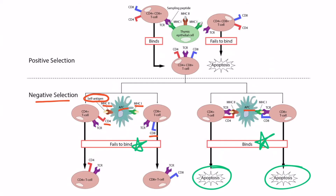You may be wondering how MHC2 presents self-antigen to CD4 cells, since MHC2 normally presents foreign antigens. It turns out that the specialized cells in the thymic medulla break the rules here and are actually capable of presenting self-antigens on MHC2. This is how CD4-positive T-cells undergo negative selection — if they recognize self-antigens, they are destroyed. In summary, negative selection is all about removing those T-cells which recognize self-antigens and would cause autoimmune disorders if they were allowed to survive.